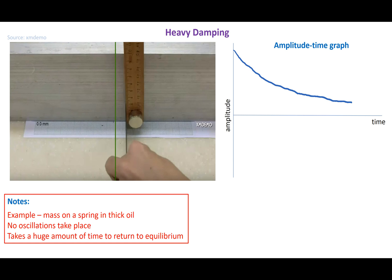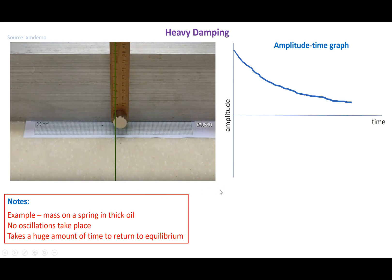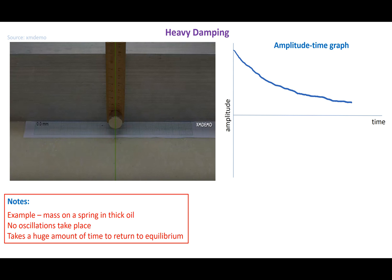The next type of damping we're going to look at is called heavy damping. Heavy damping occurs in such a way that you do not get oscillations. An example of this would be a mass on a spring in really thick, viscous oil. We start by pulling our pendulum to its amplitude, and it comes back to the equilibrium position, but never begins the next part of the oscillation. If you look at the graph on the right, it starts at maximum amplitude and takes a long time to get back to equilibrium. This is heavy damping.